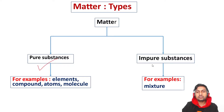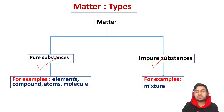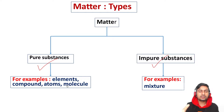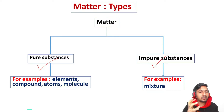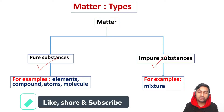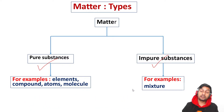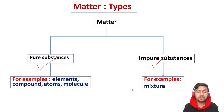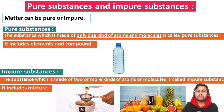Matter is classified into pure substances and mixtures. Pure substances include elements and compounds — for example, water and other compounds made of atoms and molecules. Pure substances are different from mixtures.